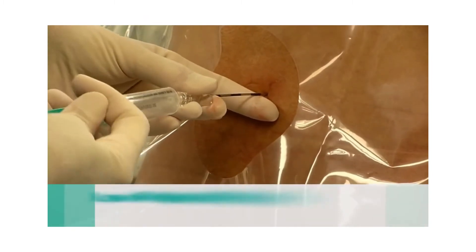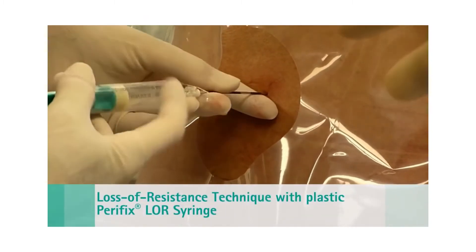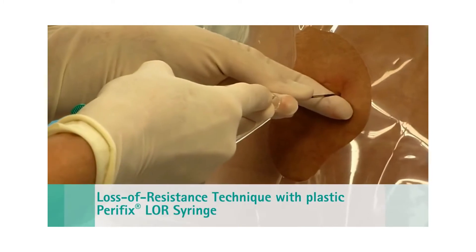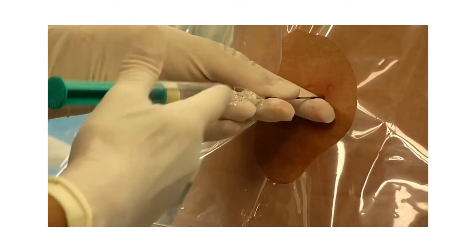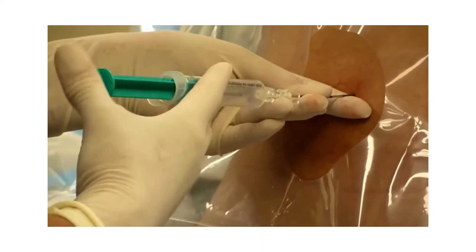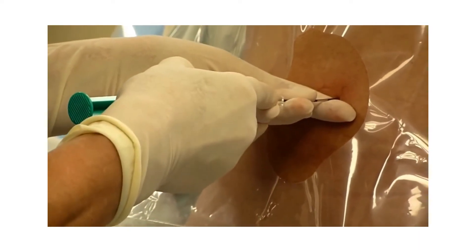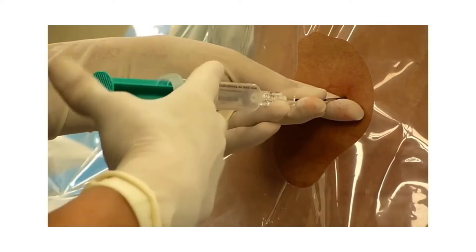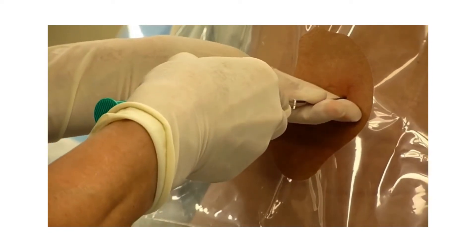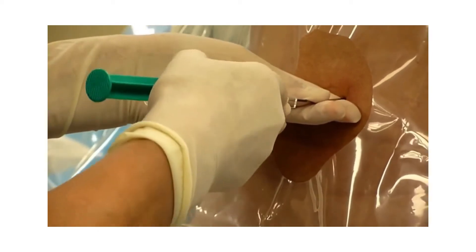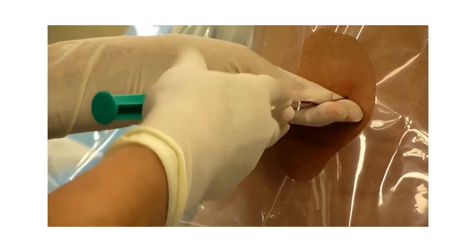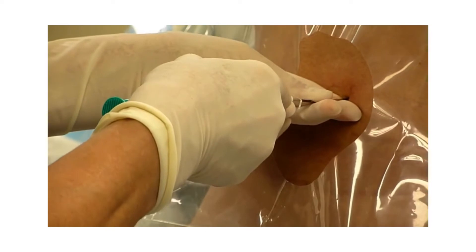Then the loss of resistance syringe is attached. We'll slowly advance the needle until we achieve a loss of resistance, which signifies that the tip of the needle is in the epidural space. You'll notice that we're making slow advances. We want to be very careful. There are centimeter markings along the side of the needle to help us gauge how far the needle has been inserted.